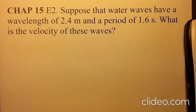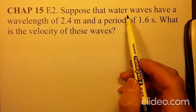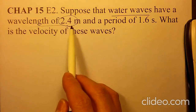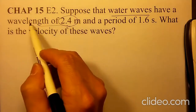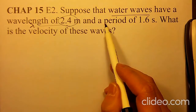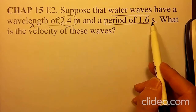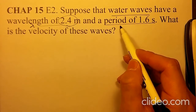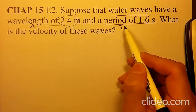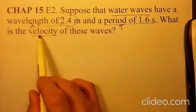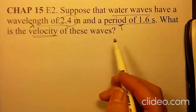Let's solve chapter 15 E2. Suppose the water wave has a wavelength of 2.4 meters, lambda, and a period of 1.6 seconds. The period is T. What is the velocity of this wave?